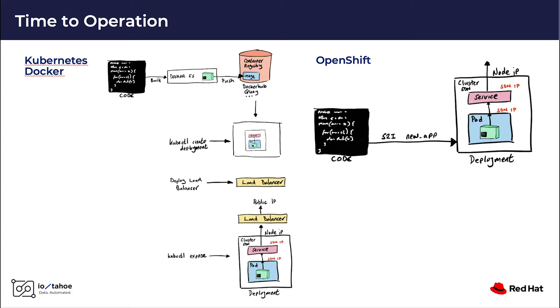OpenShift works hand-in-hand with Kubernetes to provide a way to build those containers for applications. So basically, containers make life easier for developers and system admins. So how does OpenShift differ from other platforms?